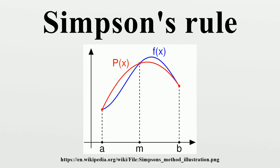Since the error term is proportional to the fourth derivative of f, this shows that Simpson's rule provides exact results for any polynomial f of degree 3 or less, since the fourth derivative of such a polynomial is zero at all points.